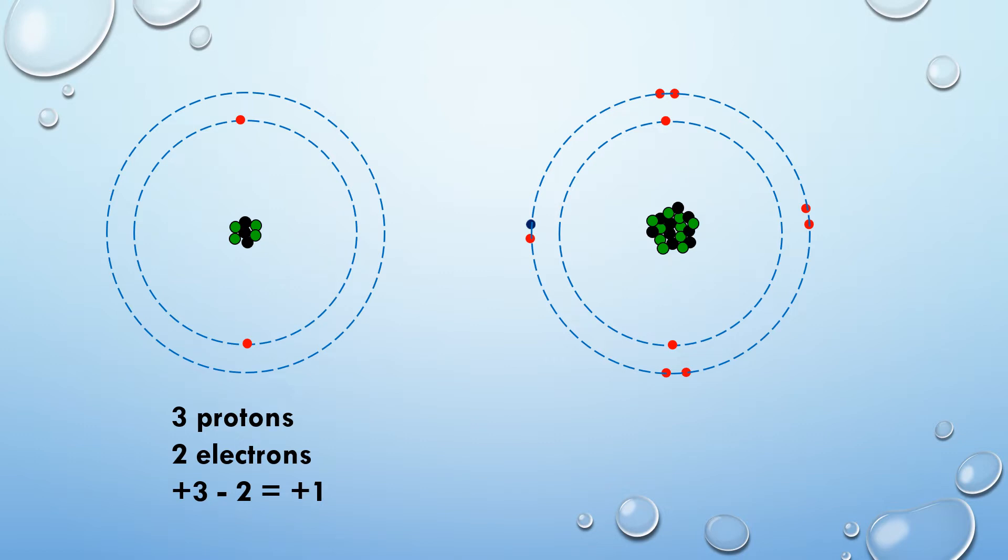We can see here that we've got 3 protons, 2 electrons, so the lithium ion is going to have a charge of plus 1. The fluorine is going to have still 9 protons, but now it's got 10 electrons and it's going to have a charge of minus 1.